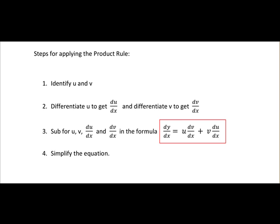Here are the steps for applying the product rule. First you identify u and v, then you differentiate them to get du dx and dv dx, and finally you sub in u, v, du dx and dv dx in the formula to find dy dx. Once you've subbed those values, you simplify the equation to get a final answer.